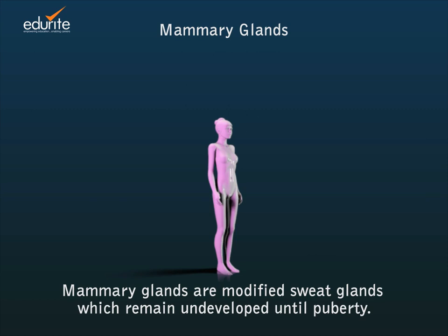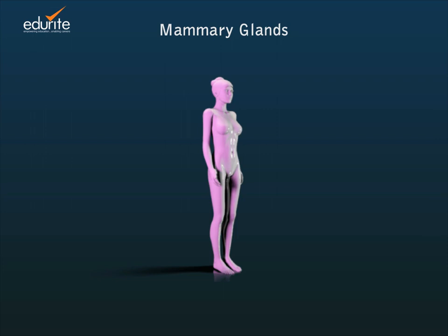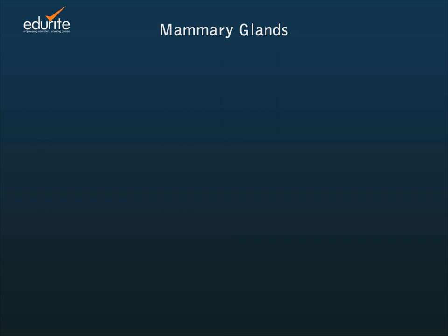The mammary glands are modified sweat glands which remain undeveloped until puberty. They develop when progesterone and estrogen are secreted by the ovaries.